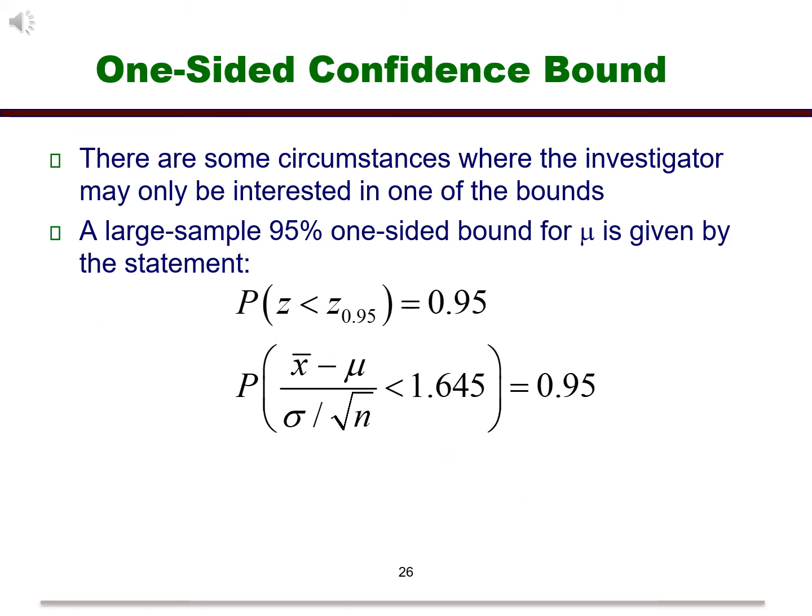There are some circumstances where the investigator may only be interested in one of the bounds. Maybe a situation has occurred where you are looking at strength of a material and we only care about it not being strong enough. This would warrant only a lower bound. Another situation could be waste. In that case, we are only interested in an upper bound.